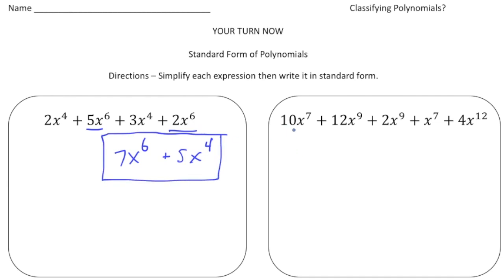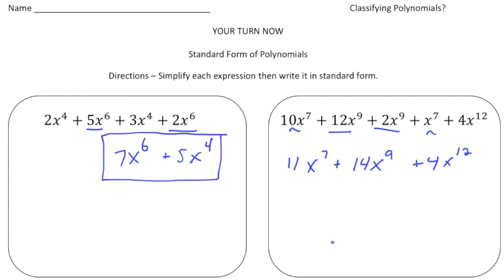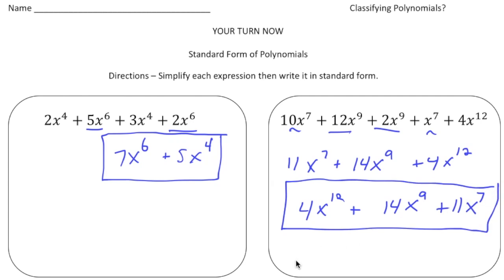The second one has five terms. First let's simplify: 12x to the ninth plus 2x to the ninth gives us 14x to the ninth. Then 10x to the seventh plus 1x to the seventh gives us 11x to the seventh. And we have 4x to the twelfth. Now ordering from highest degree to lowest: 4x to the twelfth plus 14x to the ninth plus 11x to the seventh. That's the expression written in standard form.